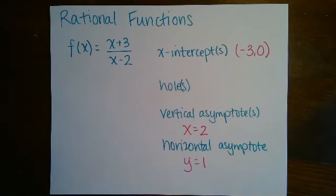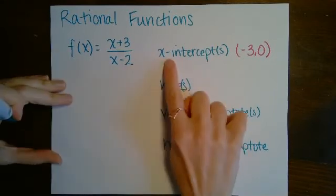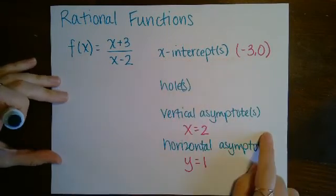And as we saw in the previous video, the only way that it could change from positive to negative or negative to positive, the only way it could change sign is if it were to go through an x-intercept or a vertical asymptote.